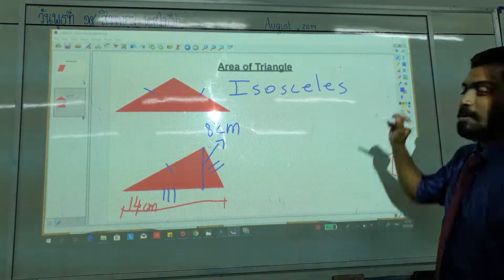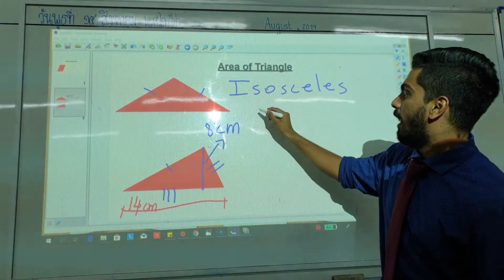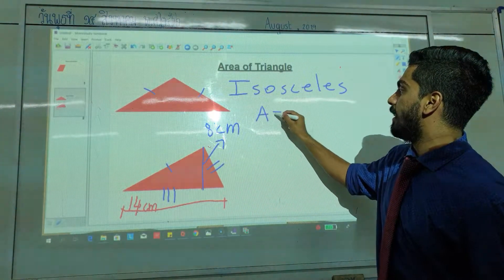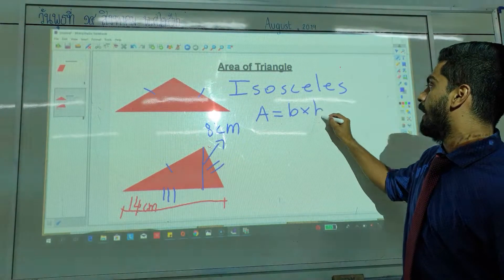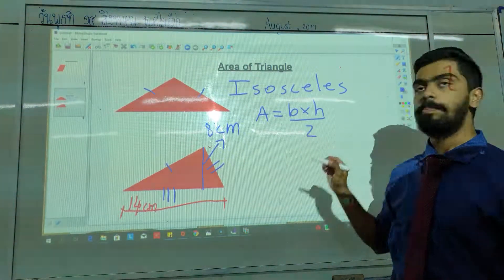So, the area A is base multiplied by height over 2.